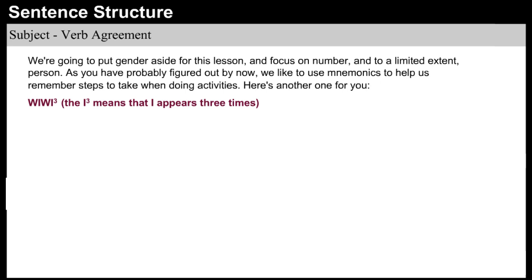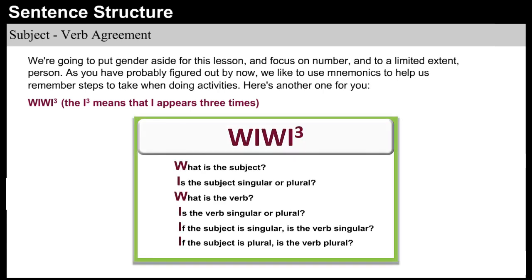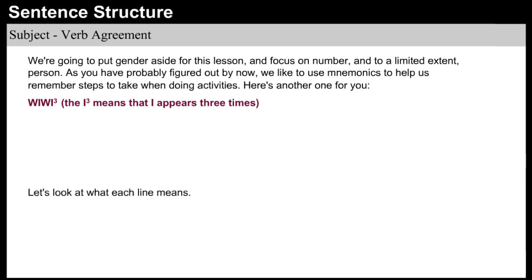As you have probably figured out by now, we like to use mnemonics to help us remember steps to take when doing activities. Here's another one: We We Three. The I to the third means that I appears three times. What is the subject? Is the subject singular or plural? What is the verb? Is the verb singular or plural? If the subject is singular, is the verb singular? If the subject is plural, is the verb plural?